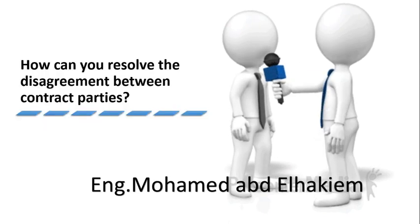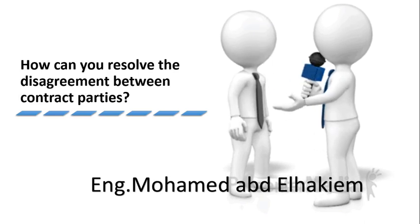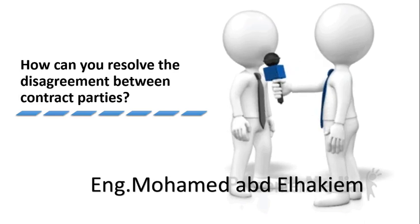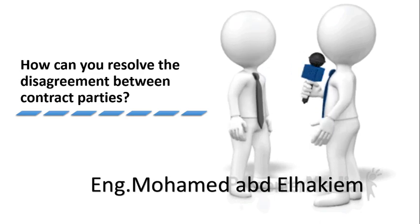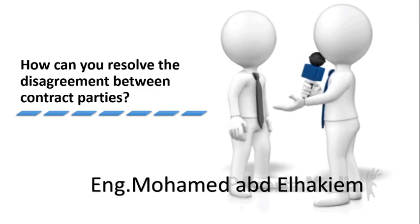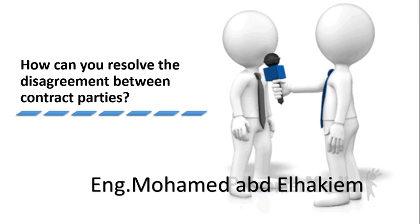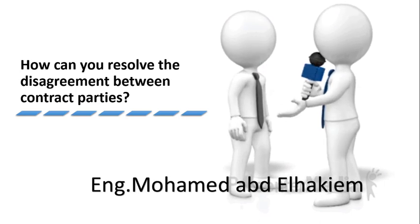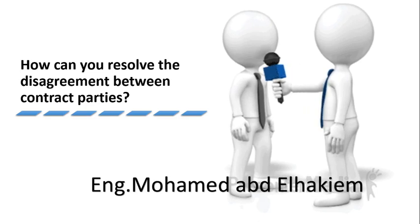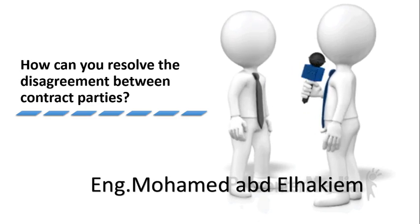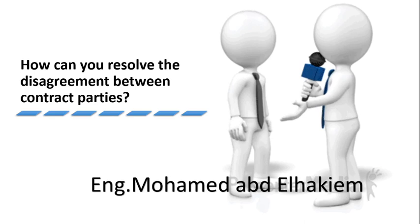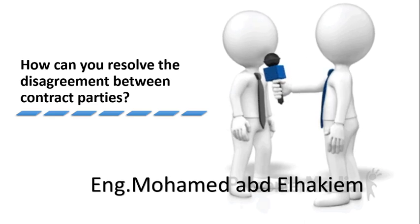Question: How can you resolve the disagreement between contract parties? Answer: I will tell them what kind of contract we are dealing with and what we want to achieve. Then I will let them understand the terms that will work for our case to achieve the desired results. Doing so will resolve the disagreement and have everyone working towards the same goal.